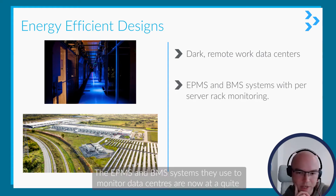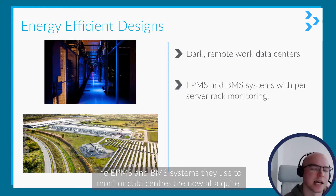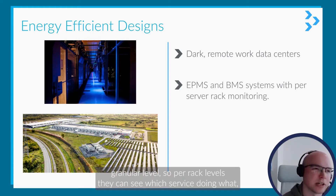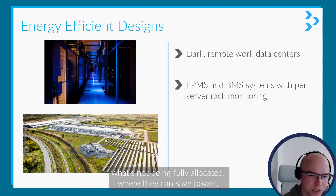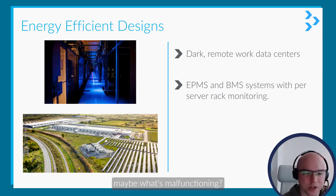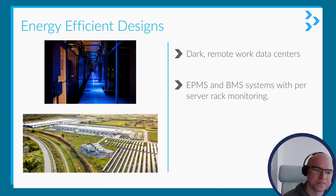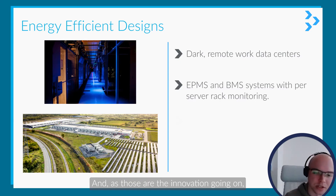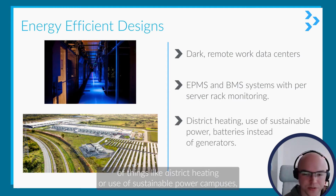The EPMS and BMS systems they use to monitor datacenters are now at quite a granular level — at a per-rack level. So they can see which server is doing what, what's not fully allocated, where they can save power, and maybe what's malfunctioning.